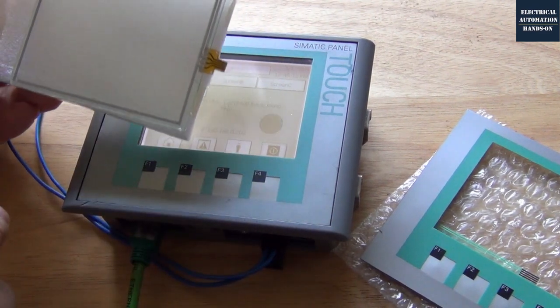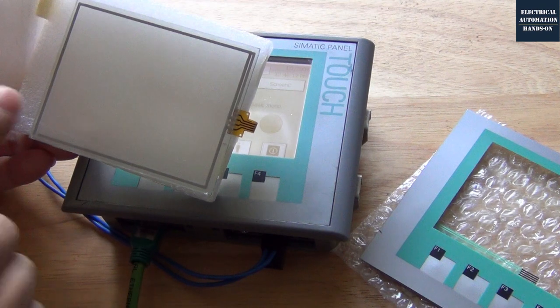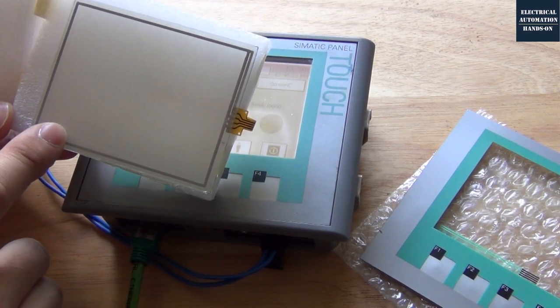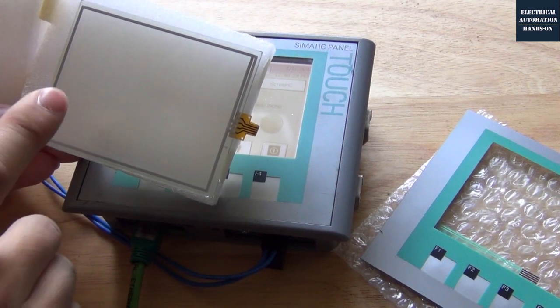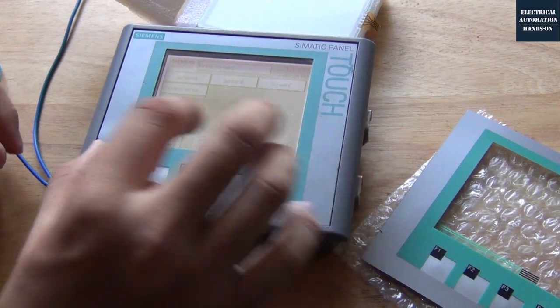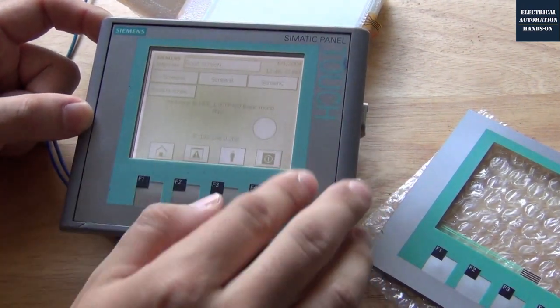Basically like this screen, the problem comes from this screen that failed. So I need to replace this screen. We need to tear down this HMI and replace this screen. Or if your HMI also has a button problem, we can replace this film and also replace this glass screen.